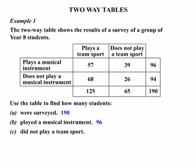Now we're looking for the number of students who did not play a team sport. We find the heading 'Does Not Play a Team Sport' and read the column underneath it, looking for the total. There are 65 students who did not play a team sport.